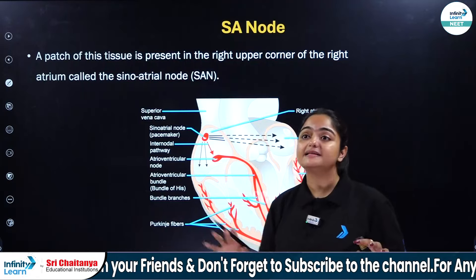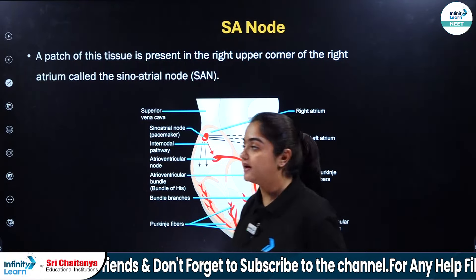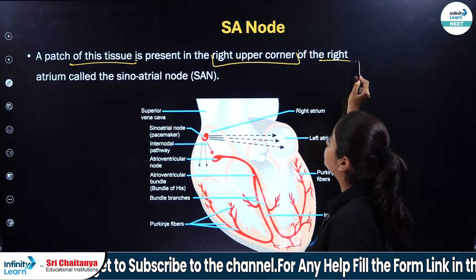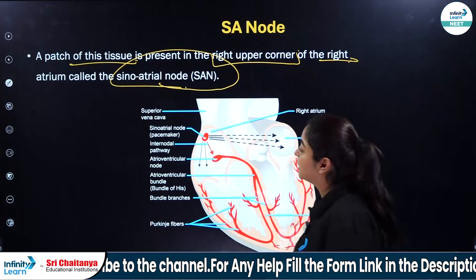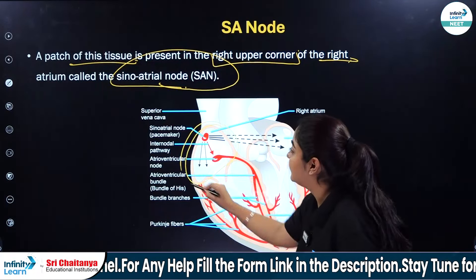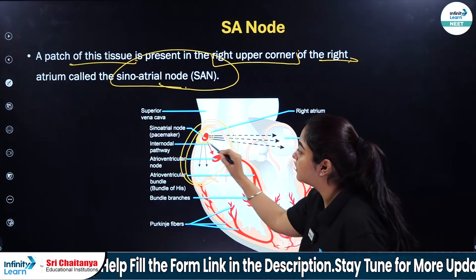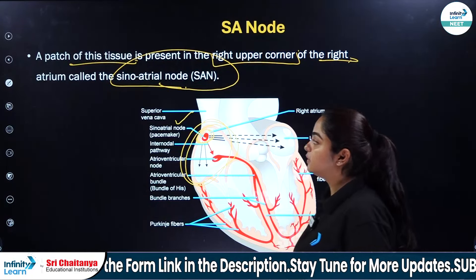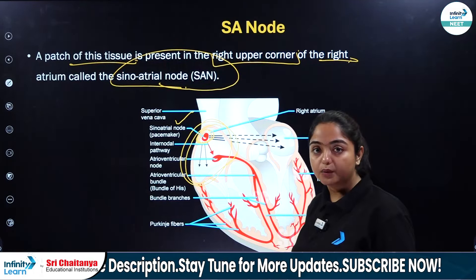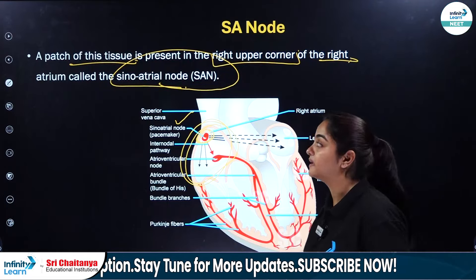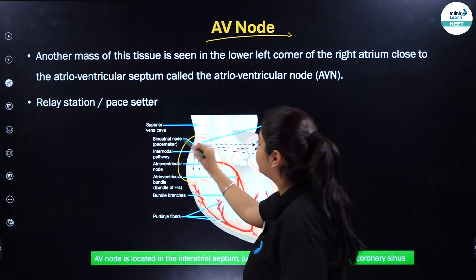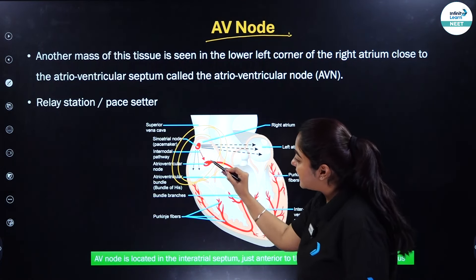Now let's talk about the SA node, which is the actual pacemaker. The SA node is a patch of tissue present in the right upper corner of the right atrium, known as the sinoatrial node. If you look here, this is your right atrium — the SA node is located in the top right corner of the right atrium.